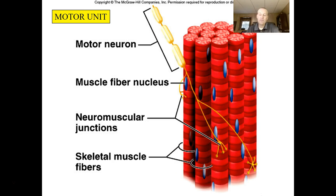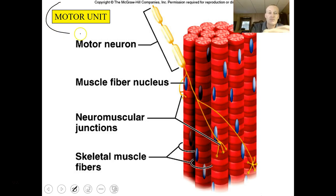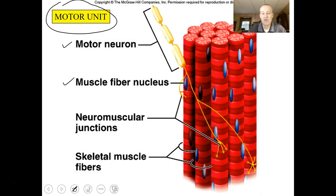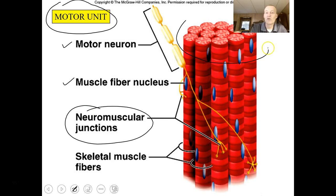There isn't a one-to-one relationship between motor neurons and muscle cells. We have what we call a motor unit — one motor neuron that connects to or contacts many muscle fiber cells. You can see there are many neuromuscular junctions here; this one motor neuron is servicing eleven muscle cells, so it's a one-to-eleven relationship in that particular example.